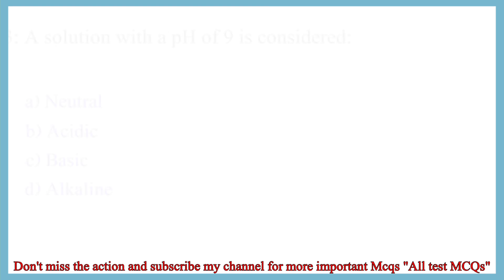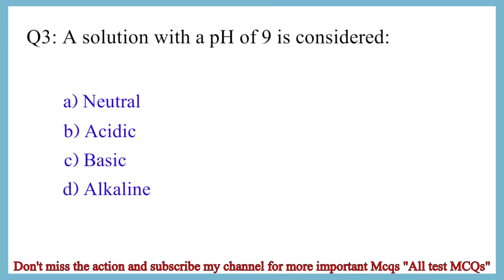Question No. 3. A solution with a pH of 9 is considered? The correct answer is option D: Alkaline.